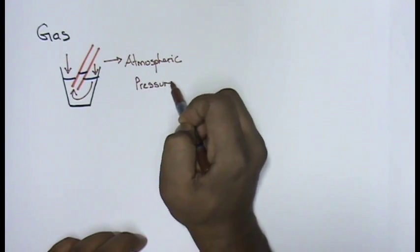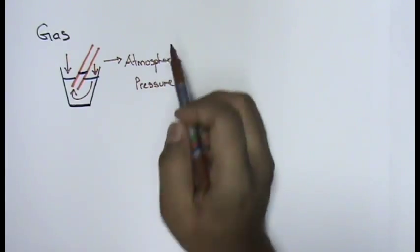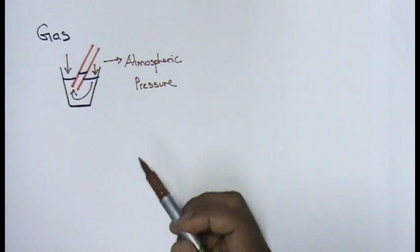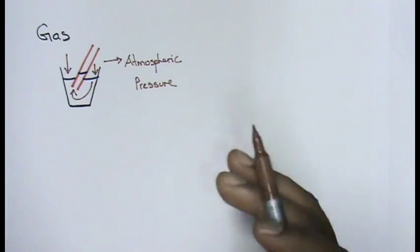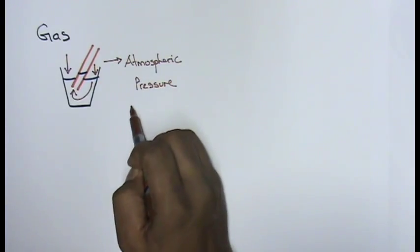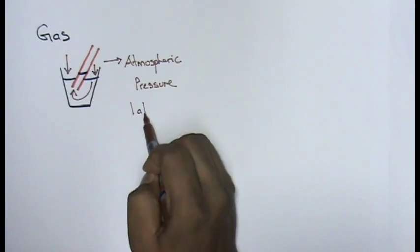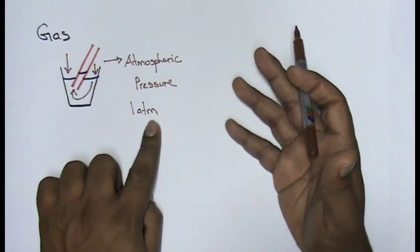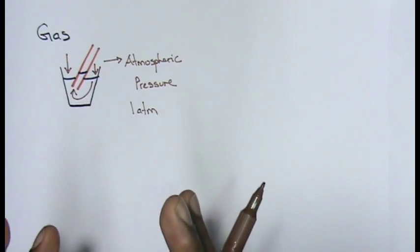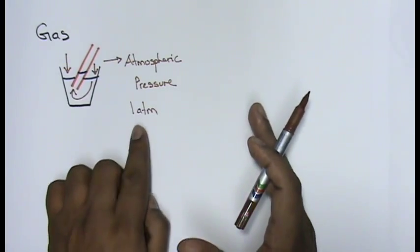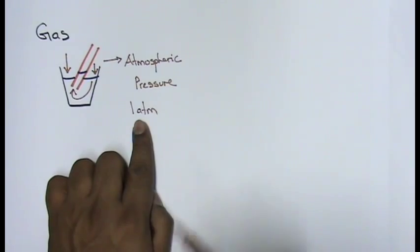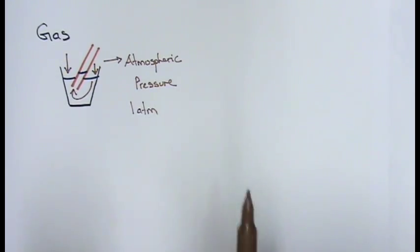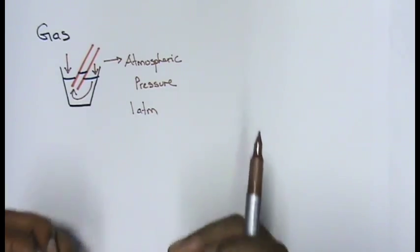That pressure is what we call your atmospheric pressure. Your atmospheric pressure - how we used to put a value for data, we used to put a value for an example, 1 atm, which stands for 1 atmospheric. But still, by me writing 1 atm, it is difficult for people to understand what the value for 1 atm represents.